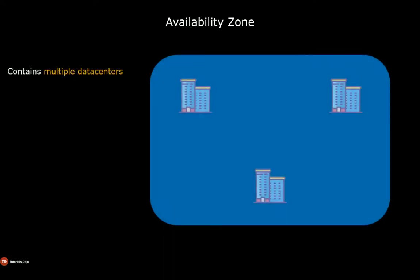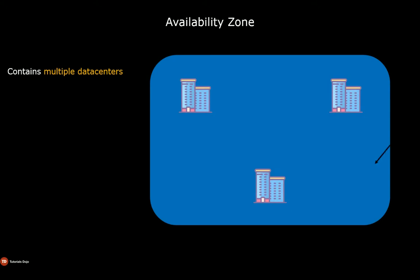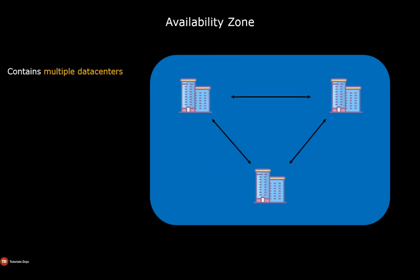Availability zones are unique physical locations within a region that contains multiple data centers. Each data center has independent power, networking, and cooling.